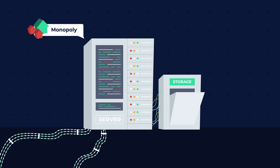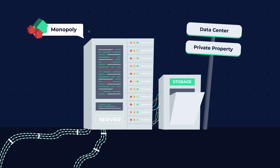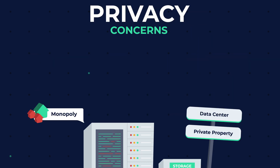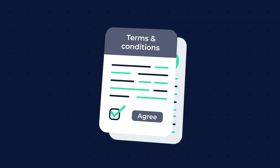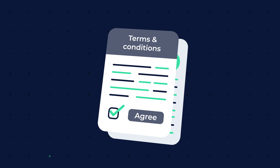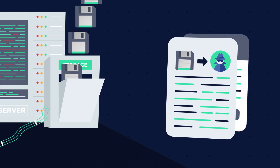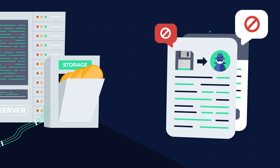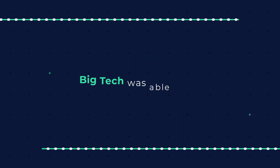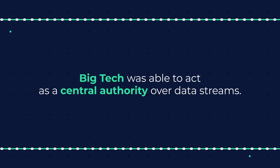This came with a price since data was stored on centralized data centers and was essentially property of the platform owners. This brought privacy concerns because users had to accept the terms and conditions of the platforms, and often the result was the loss of ownership, personal data being sold to third parties, and freedom of speech censorship. In short, big tech was able to act as a central authority over data streams.